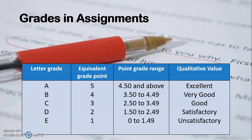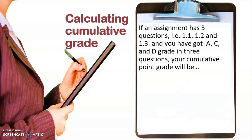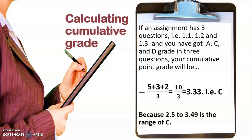Sometimes learners get confused about why they get a particular grade. Let me show you one example of how we calculate the cumulative grade. If an assignment has three questions — 1.1, 1.2, and 1.3 — and your evaluator has given you A grade in 1.1, C grade in 1.2, and D grade in 1.3, then since A equals 5, C equals 3, and D equals 2, you add 5 plus 3 plus 2 and divide by 3, which gives 3.33. That is a C grade, because the range for C is 2.5 to 3.49.